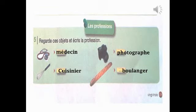Les professions. On va deviner la profession selon ses objets. Exercice 5 : « Regarde ses objets et écris la profession. » Quand on voit ces objets, on va deviner son métier ou sa profession. Par exemple : médecin, cuisinier, photographe, boulanger.